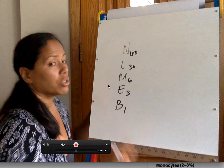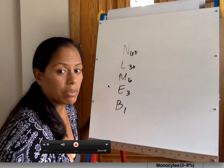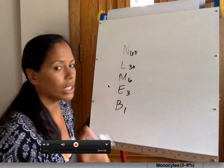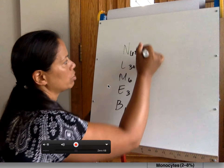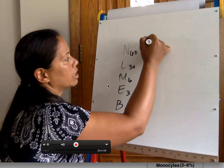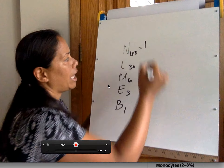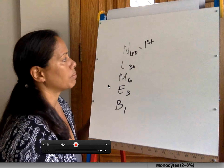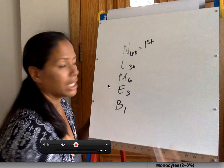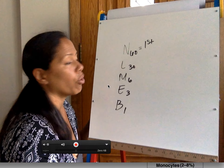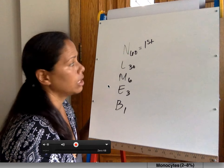What is the most abundant white blood cell in the body? The neutrophil. The neutrophil is everywhere — it's there first, it's the most abundant, and it accounts for 60% of all white blood cells.